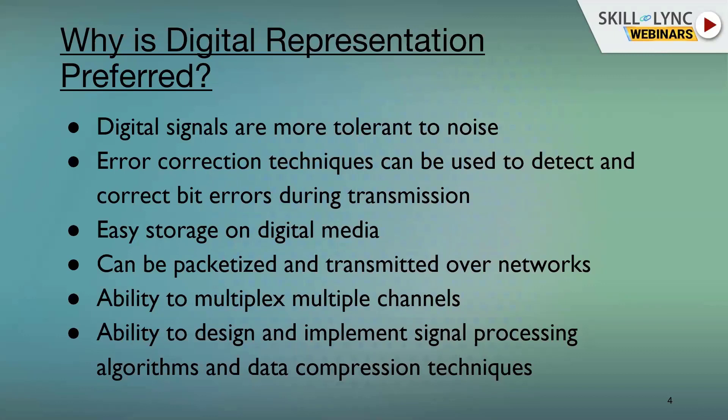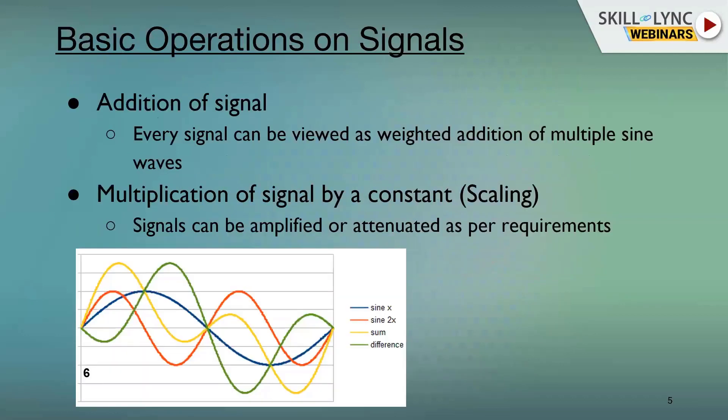We have the ability to multiplex multiple channels. Earlier I spoke about the red, green, and blue channels for a video signal. Another could be the left and right channels in audio, or Dolby surround sound 5.1 channels. We can also have multiple television channels over HDMI. We also have the ability to design and implement signal processing algorithms and data compression techniques, reducing the amount of data we need to transmit or store by utilizing certain properties and redundancies in that data.